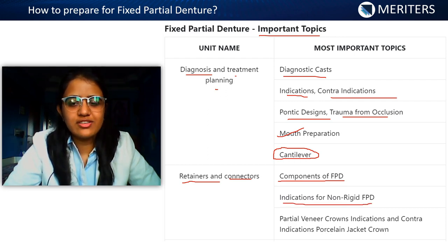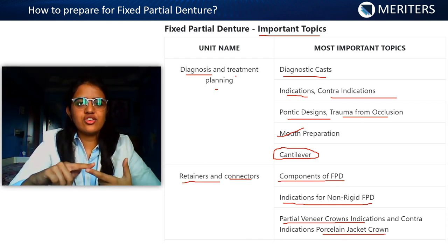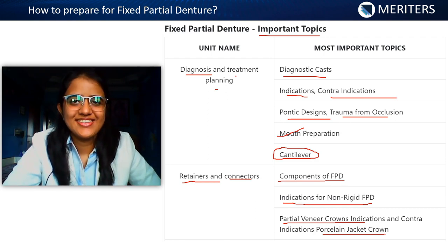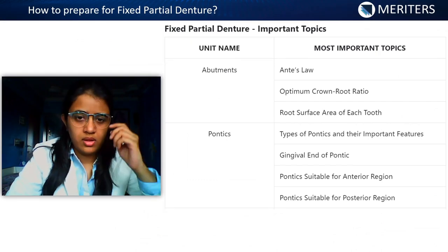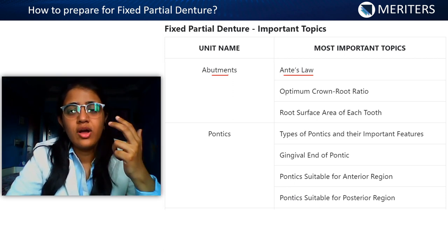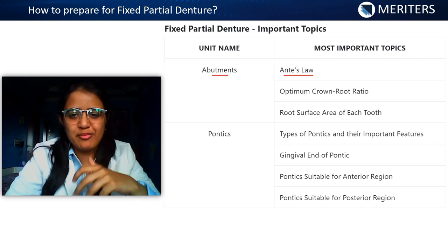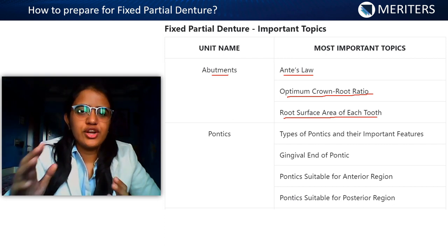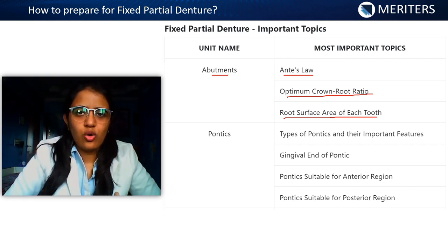Know the indications for non-rigid connectors in FPD. For partial veneer crowns, know the indications, contraindications, and the same for porcelain jacket crowns — indications, contraindications, advantages, disadvantages, and methods of tooth preparation. For abutment topics, Ante's law is important: what it is, where it is applied, the concept behind it for both FPD and RPD. Also know the optimal crown-to-root ratio and root surface area, and how to overcome complications when the abutment is weak.